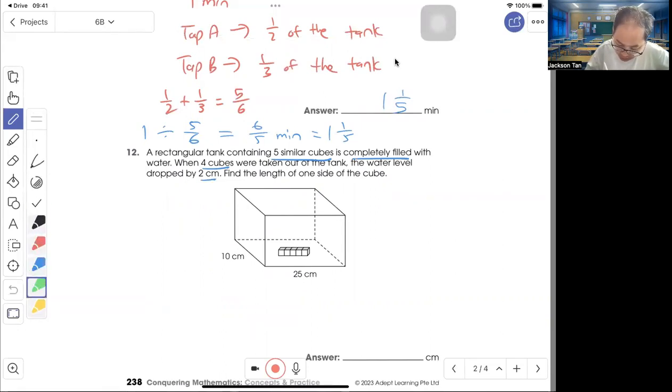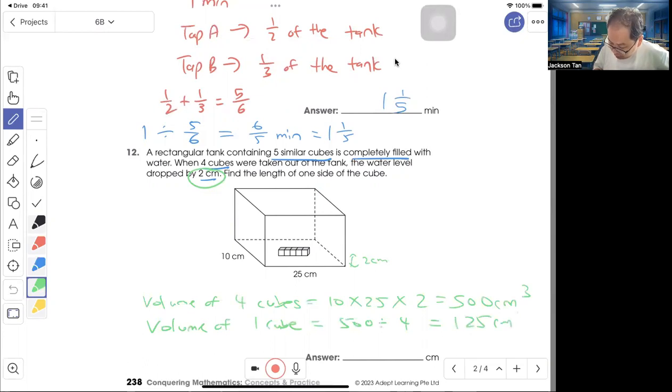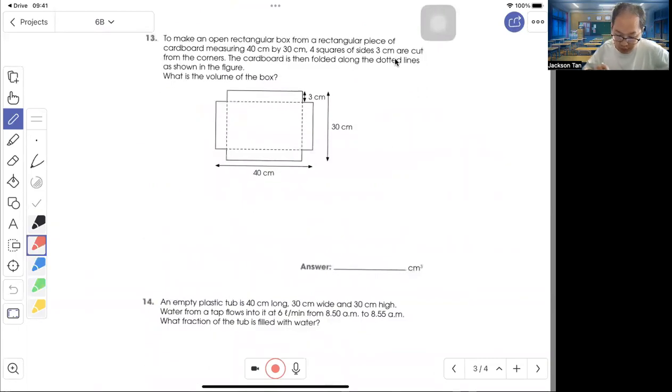You can find the volume of the four cubic meters. Volume equals length times breadth times height, that will give you 500 cm³. Volume of one cube: divide by four, that gives you 125 cm³. Now they ask for the length of one side, so you cube root 125, so one side is 5 cm. Answer: 5 cm.